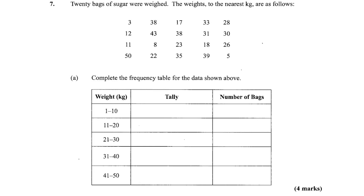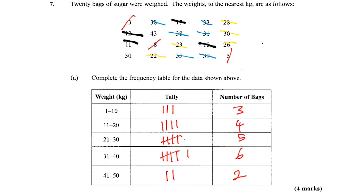What do I mean by crossing out? All right, so we want numbers between one and ten — cross out: one, two, three. Three numbers between one and ten, inclusive. For 11 to 20: one, two, three, four. Four numbers, 11 to 20. That's four marks. You better believe this is the easiest four marks you can ever get in statistics. Four marks is a lot of marks.